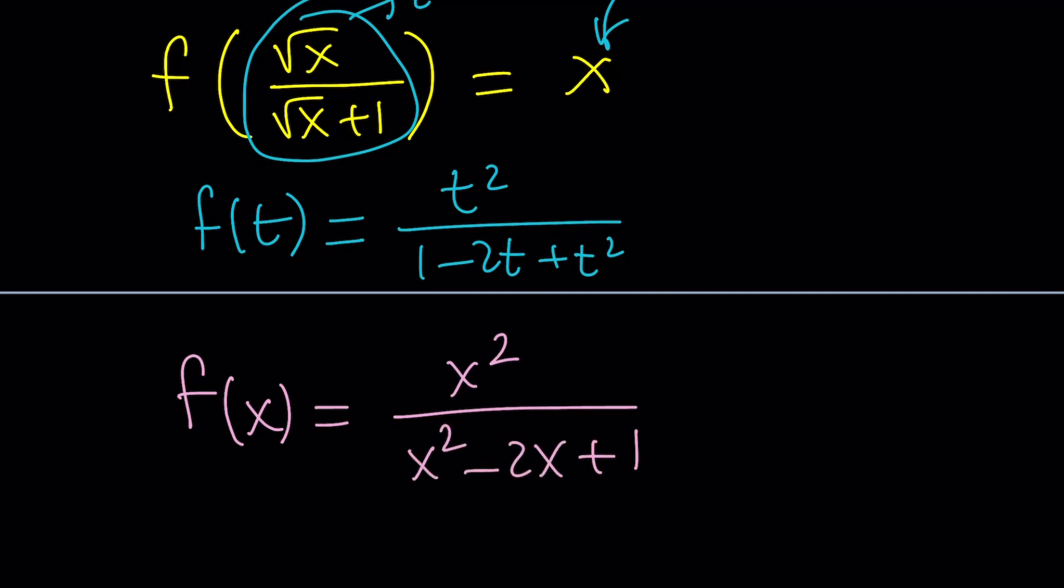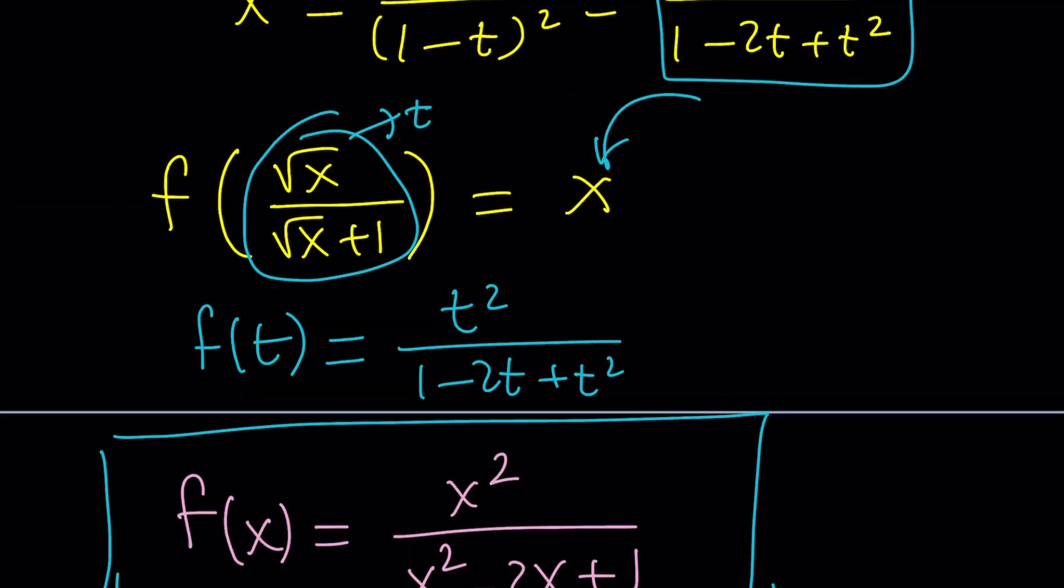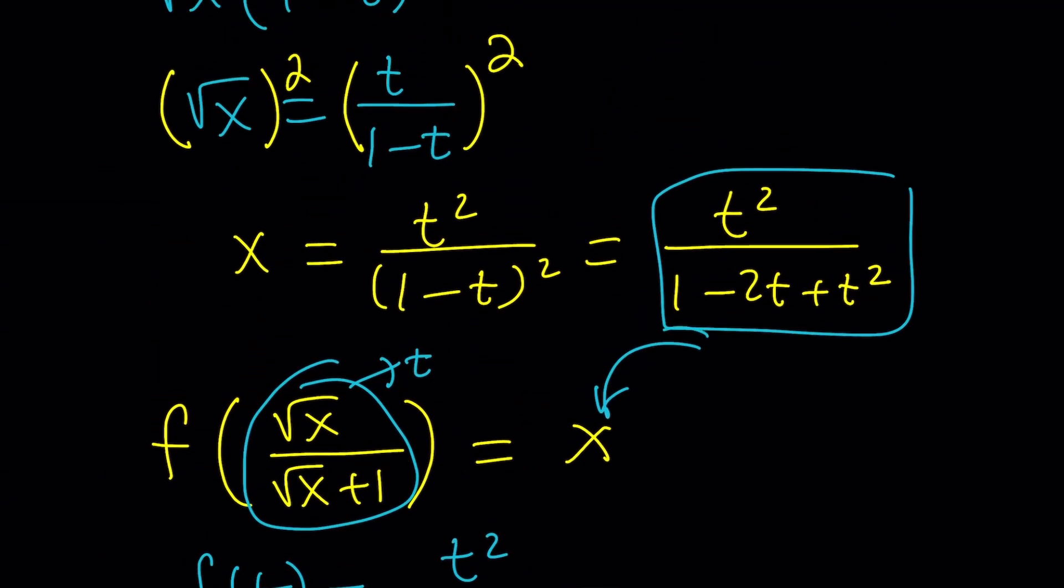So there's a couple ways you can go about this answer. You can plug it in to make sure it works. Remember when we substituted this for x we didn't do it on both sides, right? Why? Because we know that this is going to give us a t. But again,